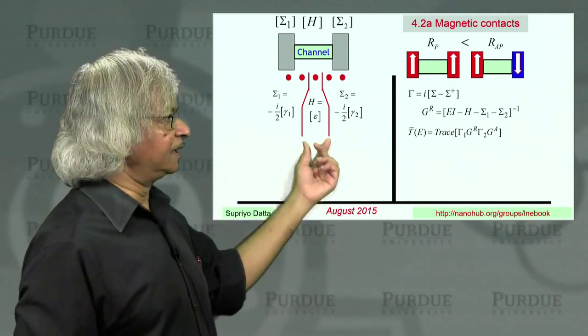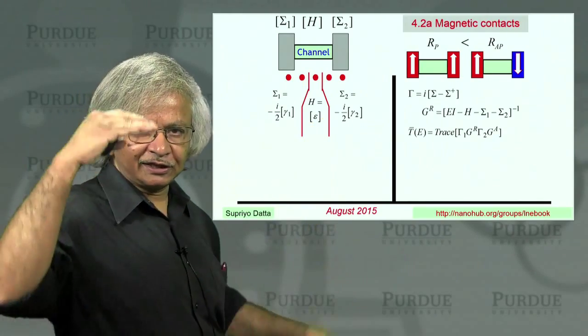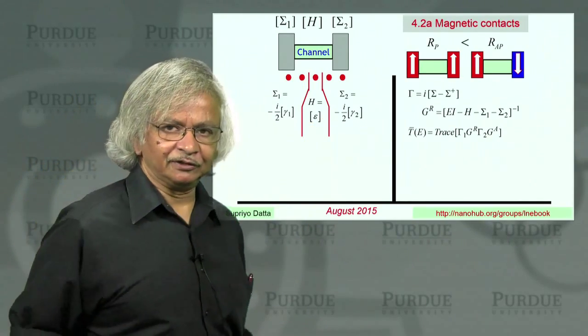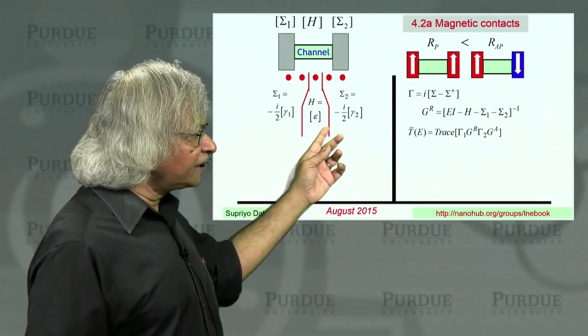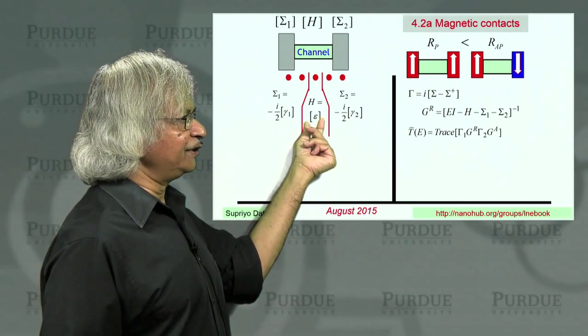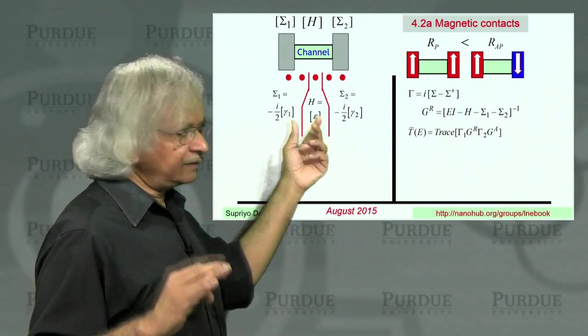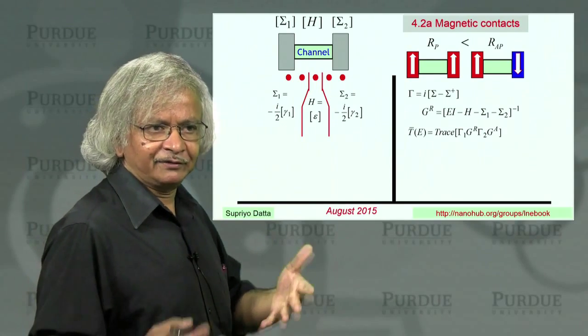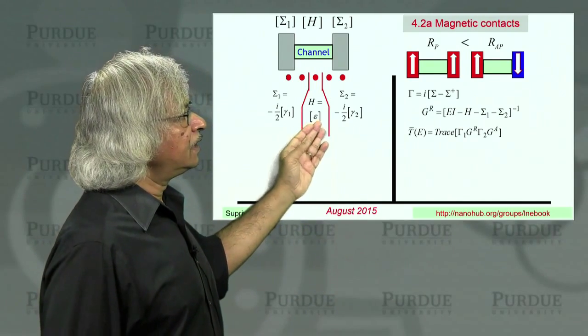In that case, the matrices are just one by one. So it's just a number. And that number is, let's say, epsilon. That's like a single energy level. I've written it as if it's a matrix by putting in these square brackets. But it's really a one-by-one matrix, which is a number.